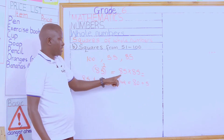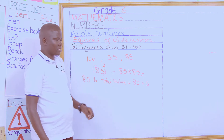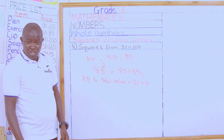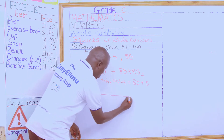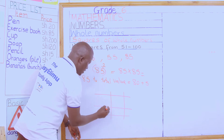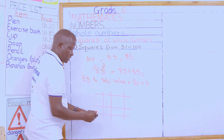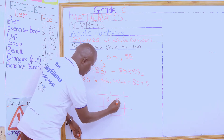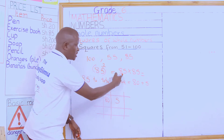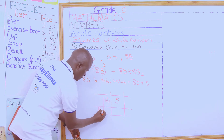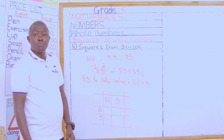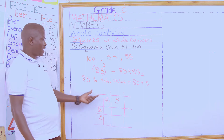That is 8 tens and 5 ones. Now we can use that to do our multiplication. We set up a small grid table to represent our numbers. Inside the table we have 85 broken into 8 and 5 on one side, and 80 and 5 on the other side. It is easier to multiply this way.